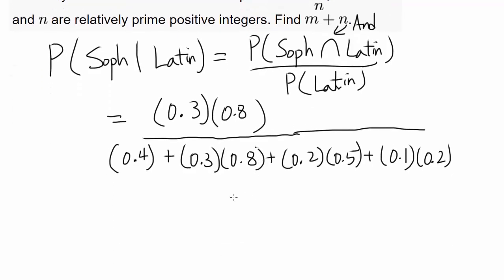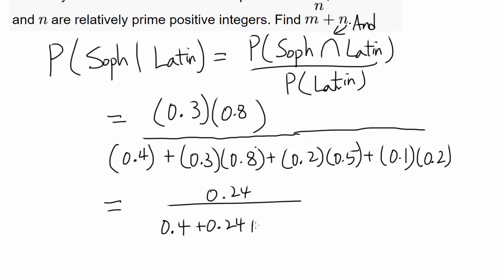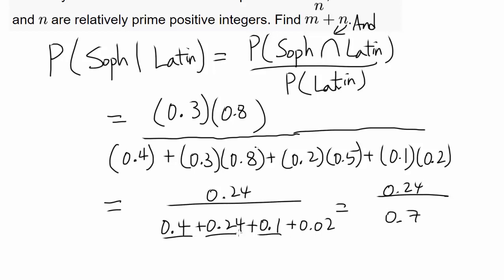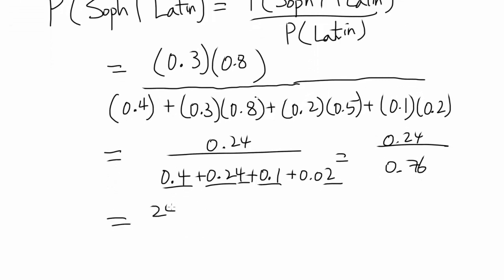So all we have to do is evaluate this fraction. We have 0.24 divided by 0.4 + 0.24 + 0.1 + 0.02, which is 0.24 divided by 0.76. This simplifies to 24 over 76, and dividing by 4 gives us 6 over 19. So our answer is 6 + 19, which is 25.